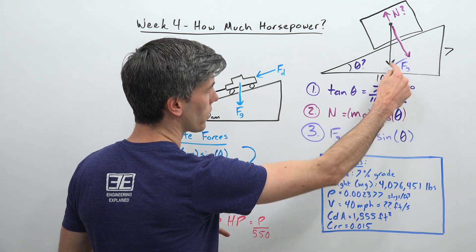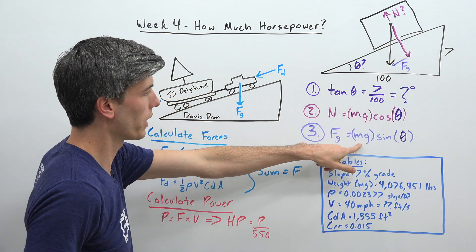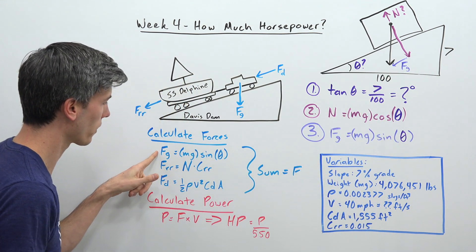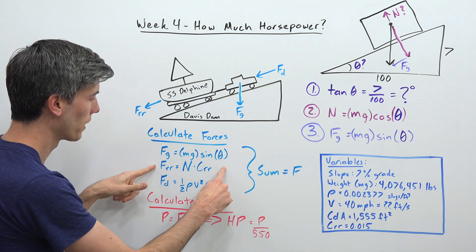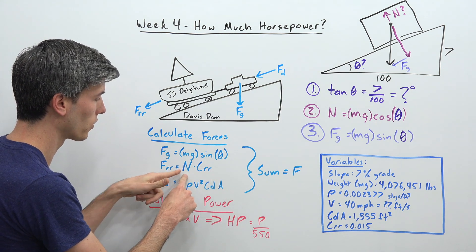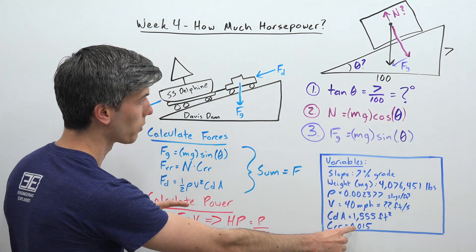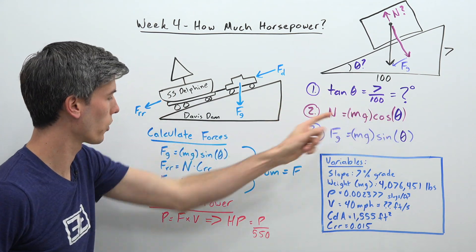Calculating the force of gravity, this component right here, we want the weight of the system multiplied by sine of theta. So that gives us our force of gravity, that's the first one we're calculating here. Next is the force of rolling resistance, which is the normal force multiplied by the coefficient of rolling resistance. We calculated that normal force right there.